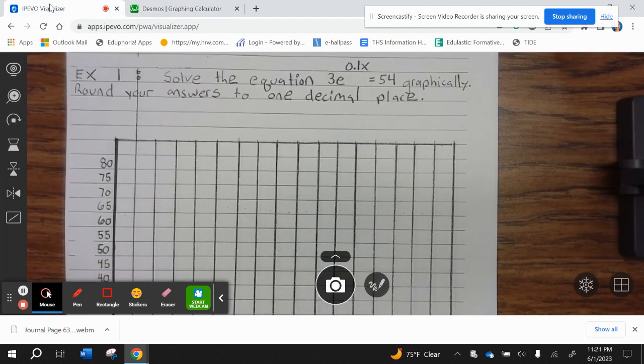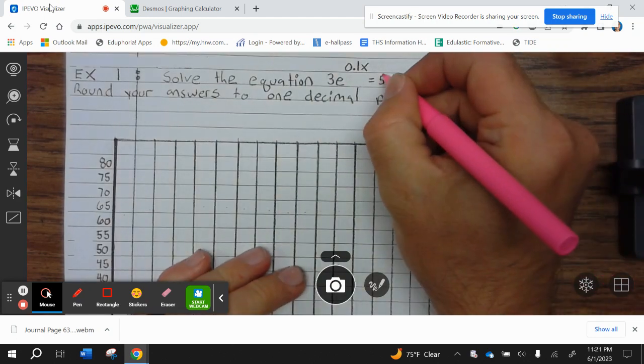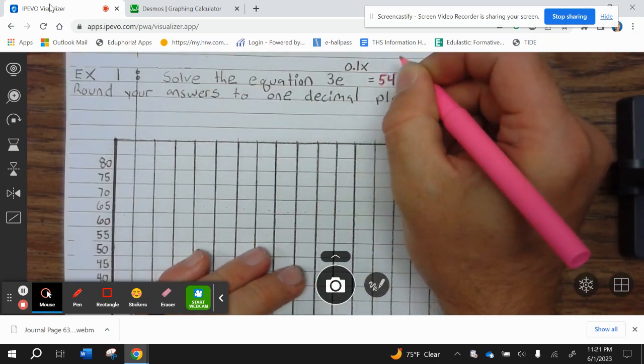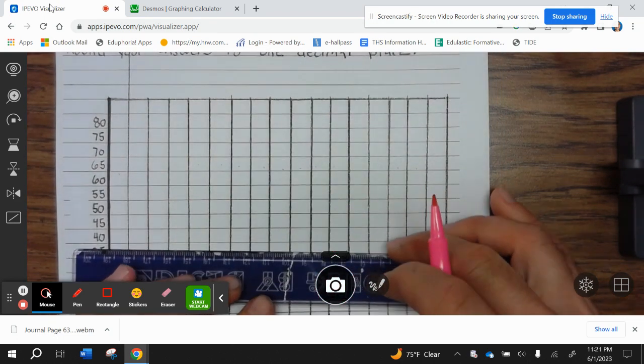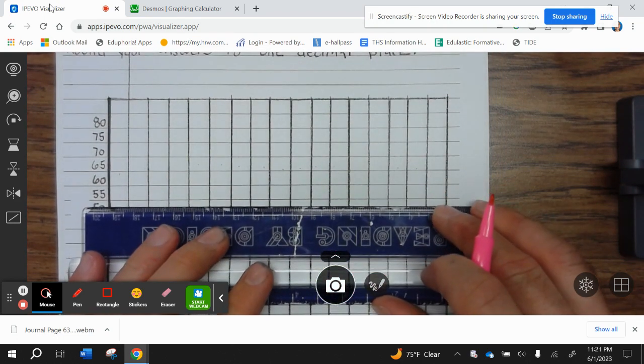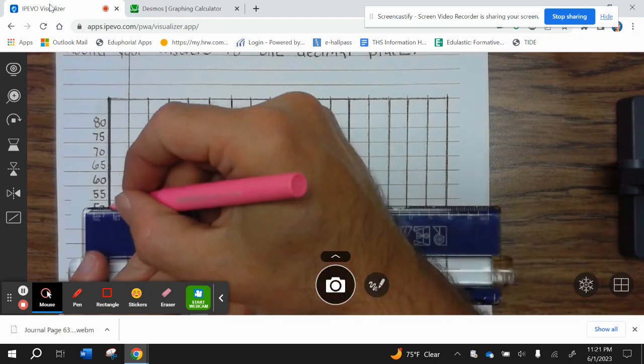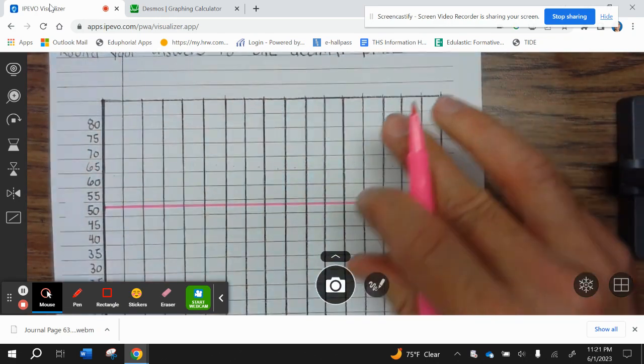We're going to draw a horizontal line. Let's go ahead and draw this in pink. So, 54 is about right here.